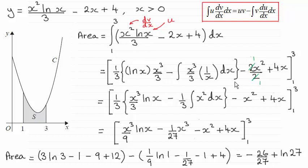Assuming you're familiar with integration by parts — in questions where we've got a natural log function, we let that be the u part. The x squared here becomes dv/dx. So according to the formula, it's going to be the u part, natural log of x, multiplied by the integral of the other part. This gives us v: integrating x squared with respect to x gives x cubed over 3.